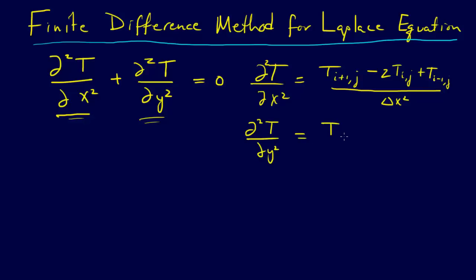And the second partial of T with respect to y is going to be similar. That will be T_{i,j+1} minus 2T_{i,j} plus T_{i,j-1}, all over delta y squared.